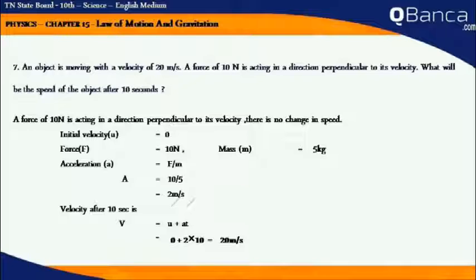Velocity after 10 seconds is V equals U plus AT, where U is the initial velocity that is equal to 0. Acceleration is equal to 2 and time is 10. Therefore, V equals 0 plus 2 into 10, equals 20 m per second.